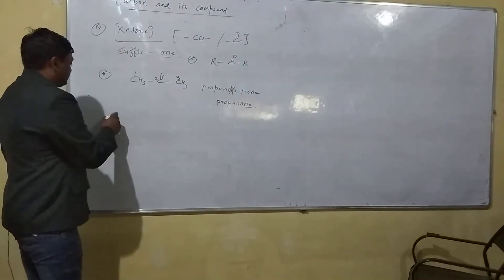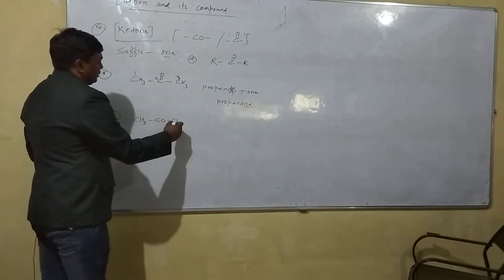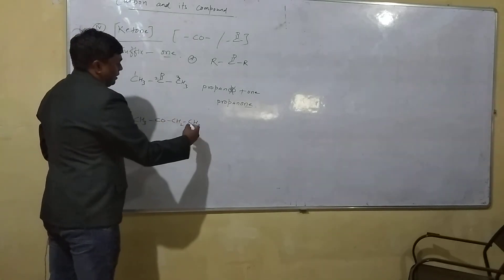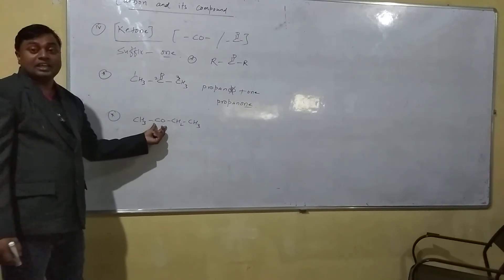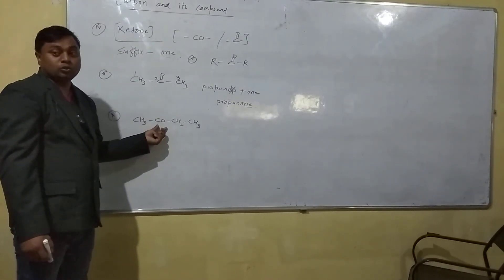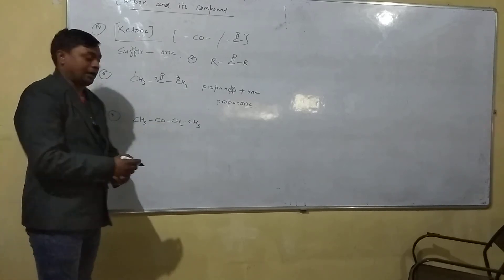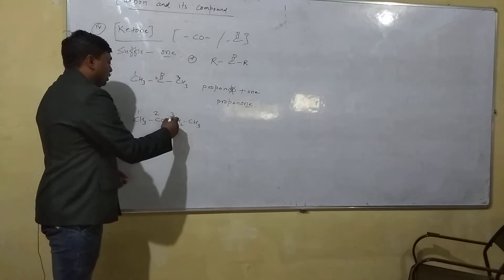Okay, suppose if they ask you to name this: CH3, CO, CH2, CH3. So you can see very clearly that CO is the functional group, that is ketone only. We have to use the suffix O-N-E, right? First, you have to count the total number of carbon atoms. How many carbon atoms are there? 1, 2, 3, 4.